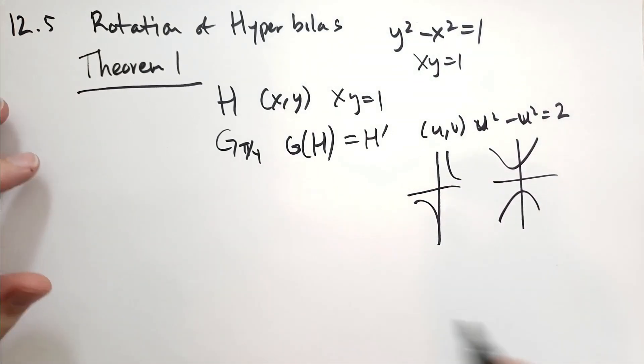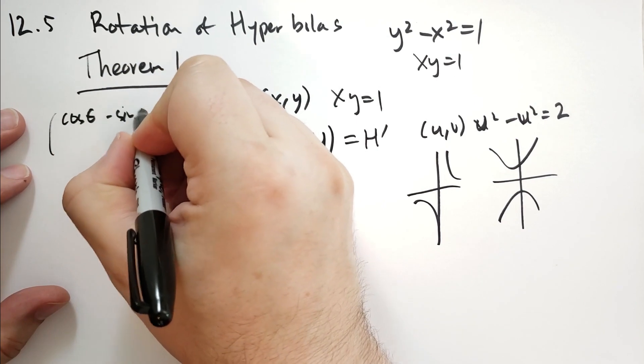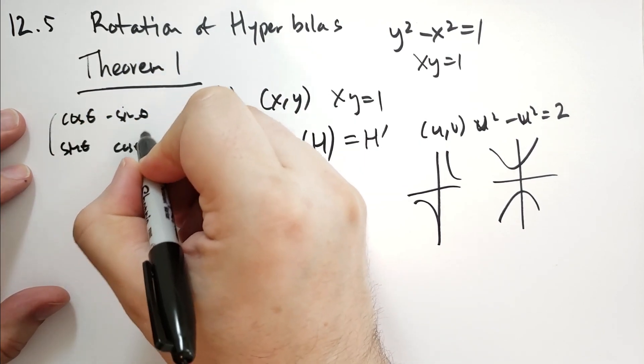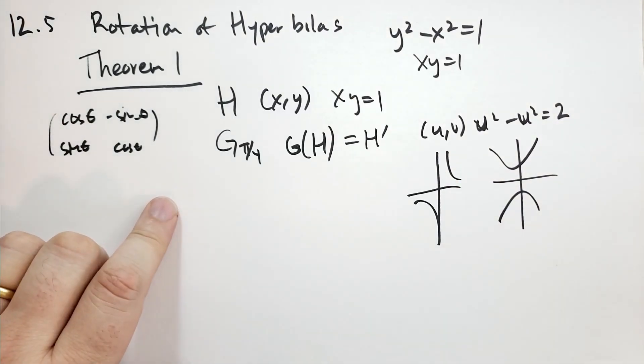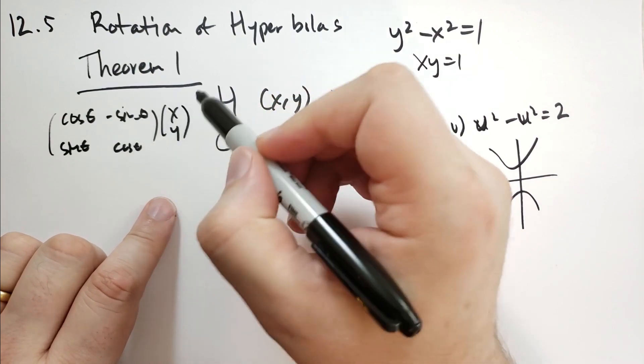So we start with rotation. Remember the rotation, we have the matrix, we have cosine of theta, minus sine of theta, and then we have sine of theta, and cosine of theta. So we're going to take this, and we're going to apply this to pi over 4 degrees through the point x, y.